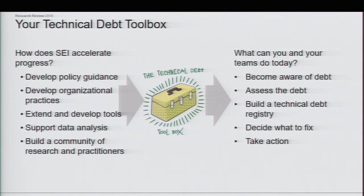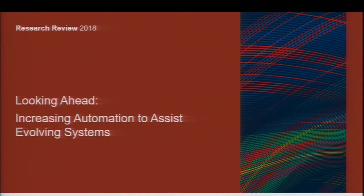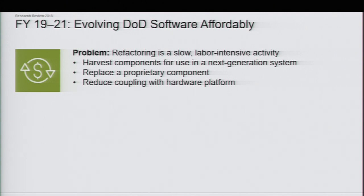Looking ahead, we're continuing to focus on automation, but it's really about fixing the systems. Detecting is important — you want to know what you're facing — but that's really only part of the story. How do you continue to fix these problems, and how does that become a continuous and evolvable lifecycle? The first new project is evolving the DoD software, looking at how you actually refactor large systems. Legacy is a problem, but it has significant value — there's functionality and capability you may want to preserve but lift to more modern platforms. How do you do that with automated design assistants?